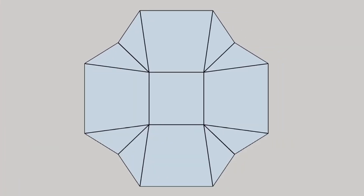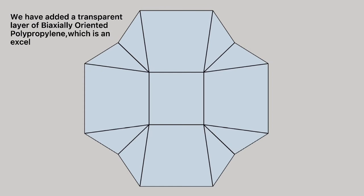Now, this is what the inside packaging will look like when turned into a bowl. We have added a transparent layer of biaxially oriented polypropylene which is an excellent moisture barrier. It helps to keep moisture away from chips.